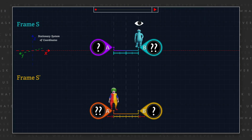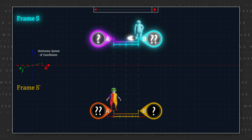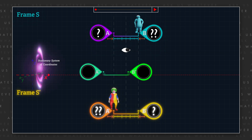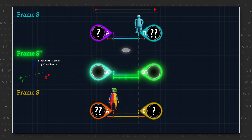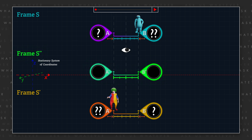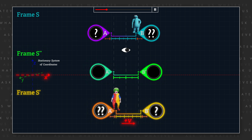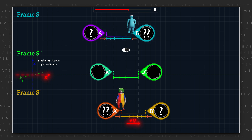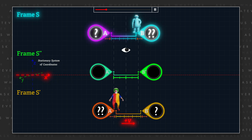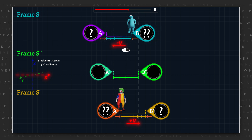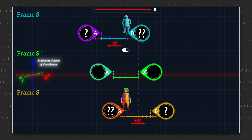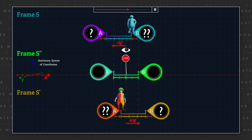Some supporters of special relativity may have wondered what would have happened if we envisioned both frames moving symmetrically with respect to a third stationary frame. So let's relocate the stationary system of coordinates between frames S and S prime and associate it with a third frame that we'll call S double prime. That is, a setup in which frame S prime moves in the positive x direction with respect to the stationary system of coordinates, frame S moves at an equal but opposite speed with respect to the stationary system of coordinates, and frame S double prime remains stationary.